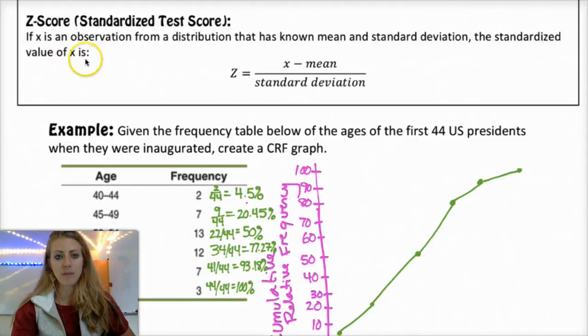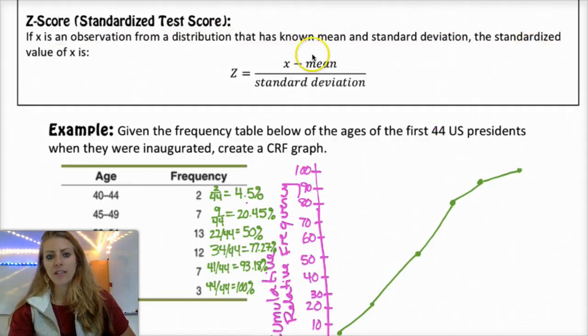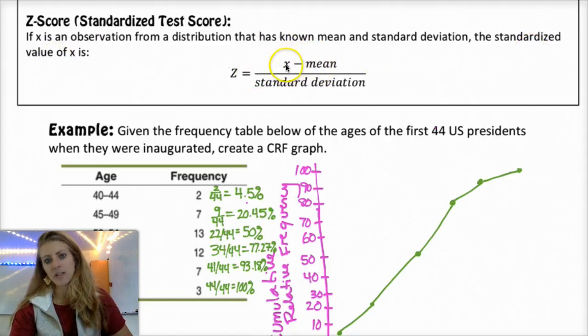So if you have X as your observation from a distribution, it has a known mean and standard deviation. The standardized value of X is Z, which is X, or the X value minus the mean, divided by the standard deviation.